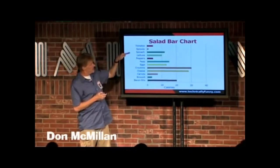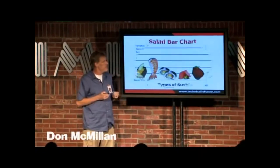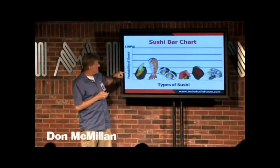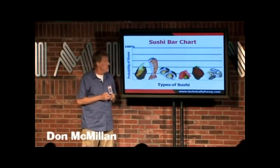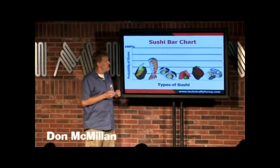Here's a salad bar chart: tomatoes, sprouts, spinach, and the different calories of each. Here's a sushi bar chart — this shows the probability of illness depending on your favorite. There's a lot of detail in my act. Please pay close attention.